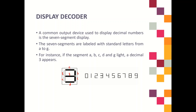For instance, if the segments A, B, C, D, and G are lit on, the decimal 3 will appear. This is the reference of the decimal numbers that will be displayed on the 7-segment display.